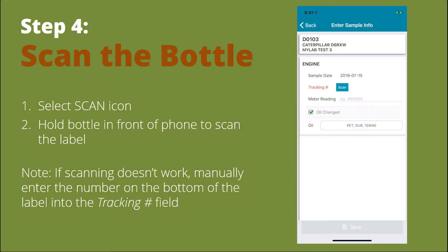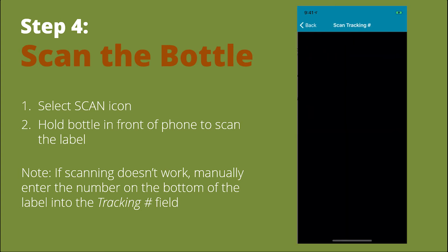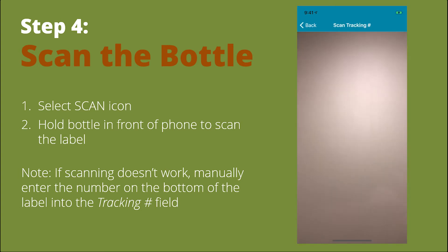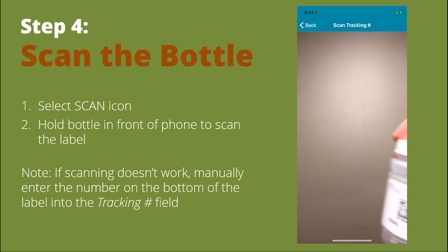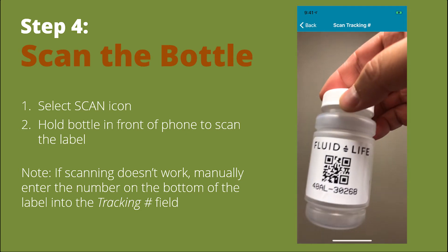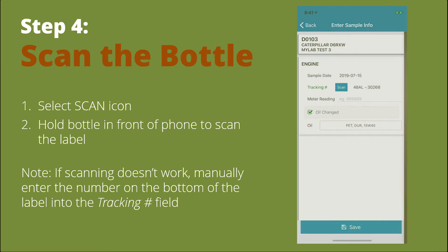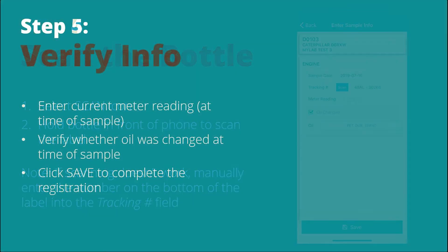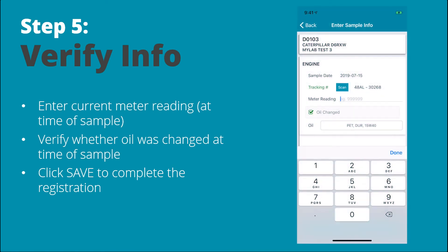Step four is scanning the bottle. Select the scan icon and hold the bottle in front of the phone to scan the label. If scanning doesn't work, manually enter the number on the bottom of the label into the tracking number field.